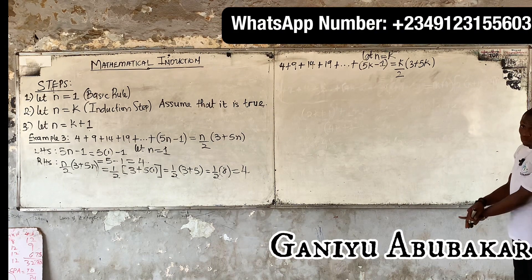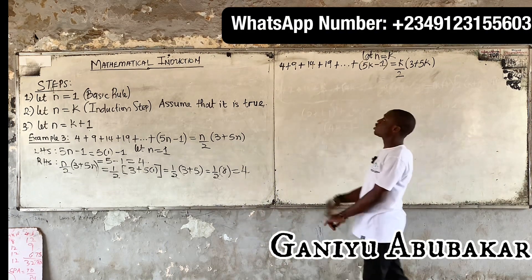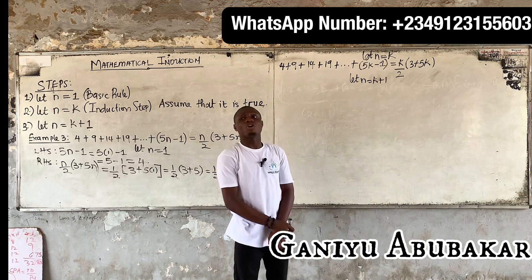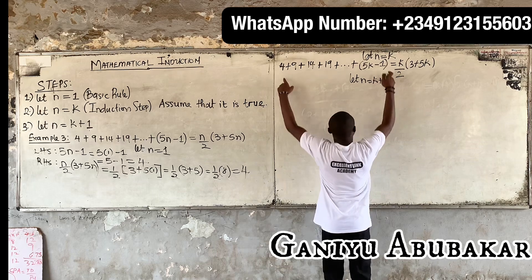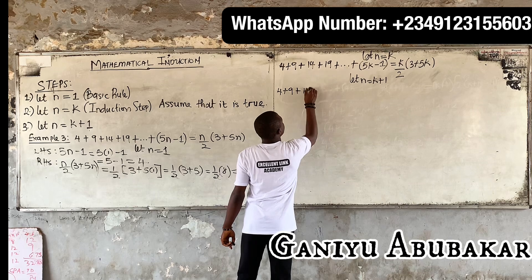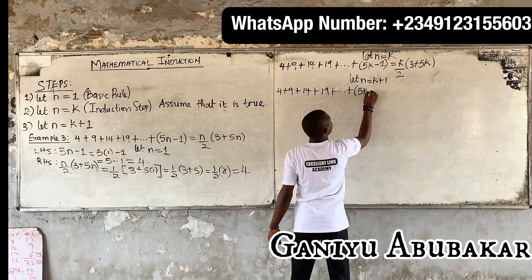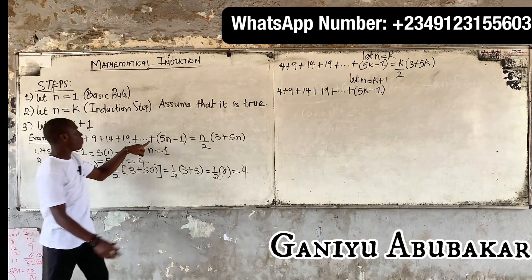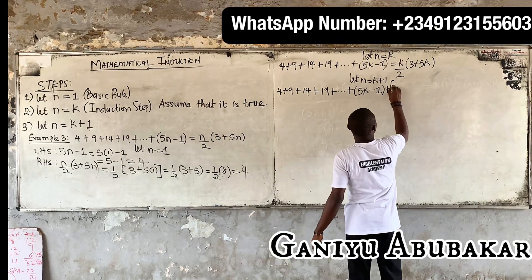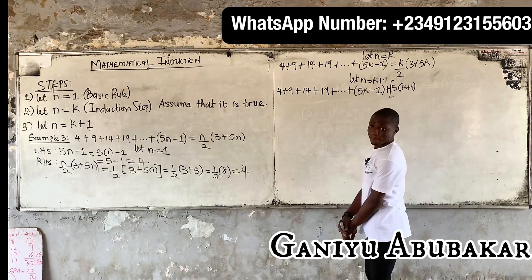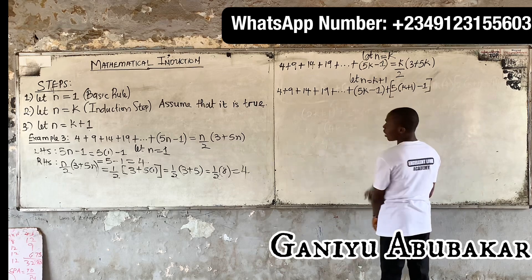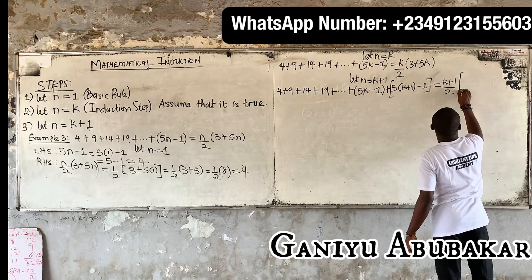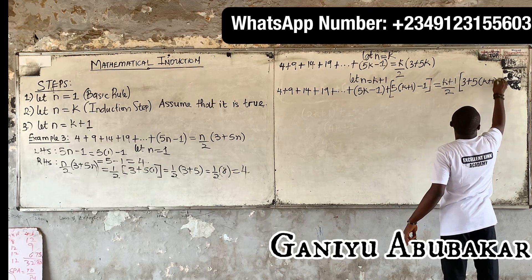We assume this is true — it's not proven yet, but we assume it is true. After the induction step, what's next is k plus one. So let n equal k plus one. For the k plus one case, we repeat what we have: four plus nine plus fourteen plus nineteen plus dot dot dot plus five k minus one, and then we add the next term five times k plus one minus one. This should equal k plus one over two, times the bracket three plus five times k plus one.